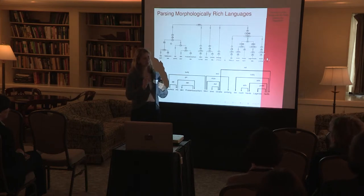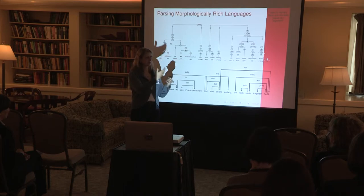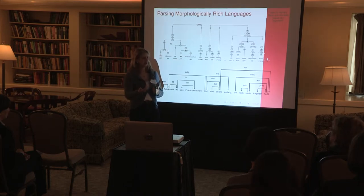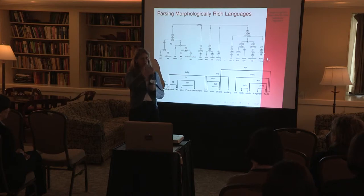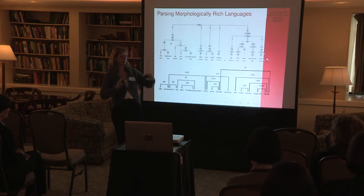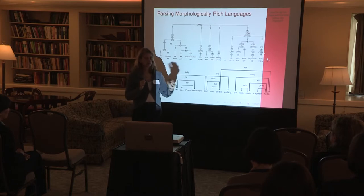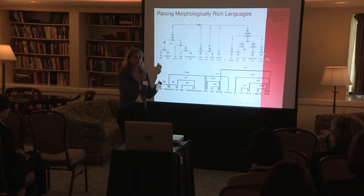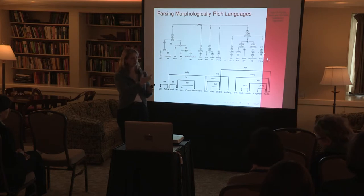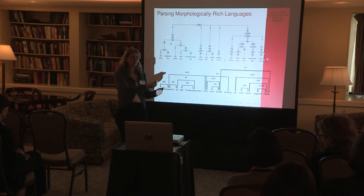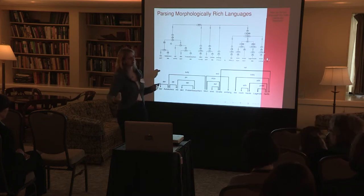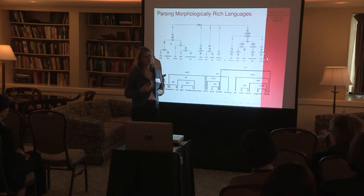Catching differences between British English and American English is possible too if you have more specific models — one model for American English, one for British English. Google normally knows where a person is located from the IP address of the computer, so if an American happens to be in Britain they'll probably get the British version, unless they select specifically for English.